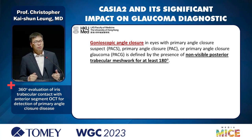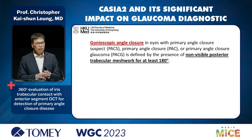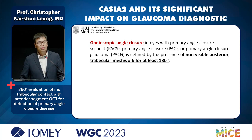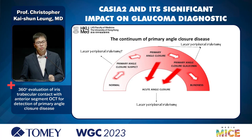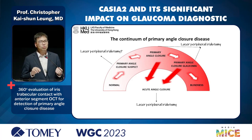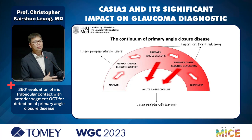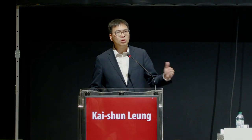The most common definition is when we cannot see the posterior trabecular meshwork for more than 180 degrees — then we say these eyes have angle closure. For PACS, we don't have high intraocular pressure and no glaucoma. For PAC, we have high IOP or peripheral anterior synechiae or both. For PACG, we have these elements together with evidence of glaucoma. We rely very much on gonioscopy for diagnosis.